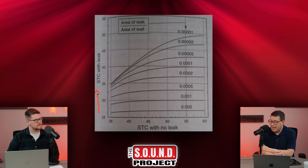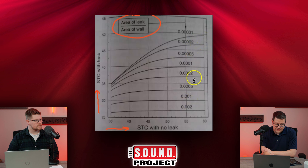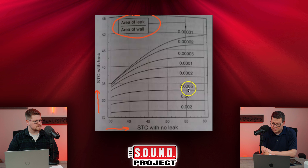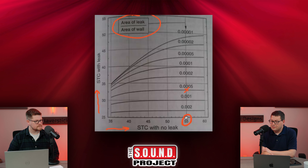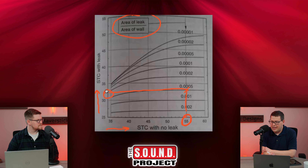On this graph, the Y-axis is the STC of the wall if it had a leak in it, and the X-axis is the STC if that wall had no leak. The different lines shown represent the area of the leak — specifically the square footage of the leak divided by the area of the wall. To give you the example of that electrical outlet in a 15-foot by 9-foot wall, that would fall somewhere around the 0.0005 range. So if you designed an STC 55 wall but it has a leak of 0.0005, you come up to that line and draw straight across to the Y-axis — and wherever it touches is the STC you're actually going to get.